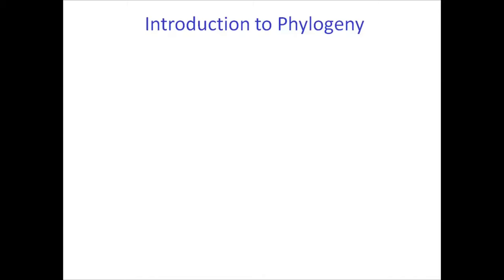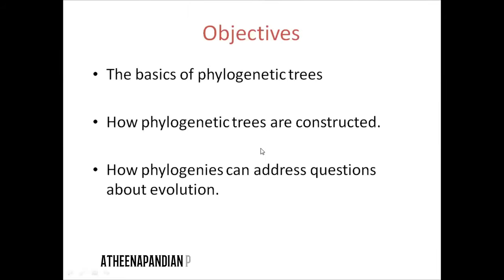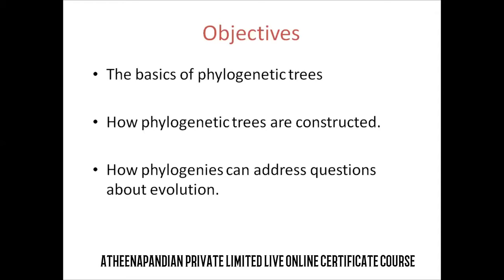In this class we are going to study about phylogeny — how to draw a phylogeny tree from available data. The objectives of phylogeny include understanding the basis of phylogeny trees, how they are constructed, and how phylogeny can address questions about evolution.